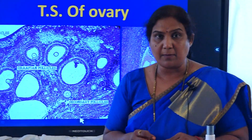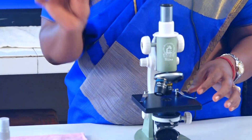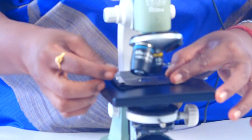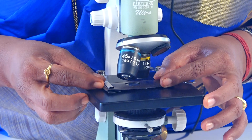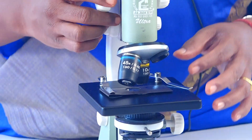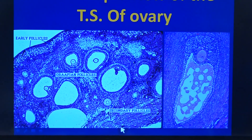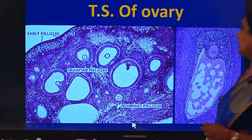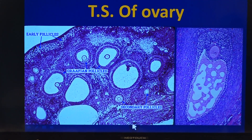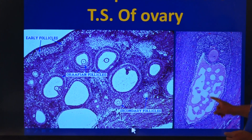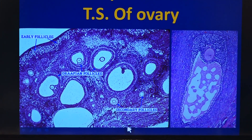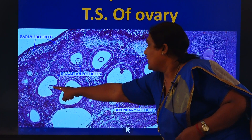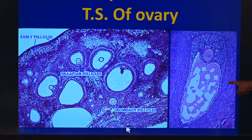The slide of the transverse section of the ovary is a permanent slide. Once again, we focus it under the microscope. In the microscopic view of the transverse section of the ovary, you will have to search for a Graafian follicle within it — immediately you will know it's a transverse section of the ovary depicting the Graafian follicle. What we are observing here is the secondary oocyte, this portion enlarged. Where we do not see the secondary oocyte, those are not the matured ovarian follicles.